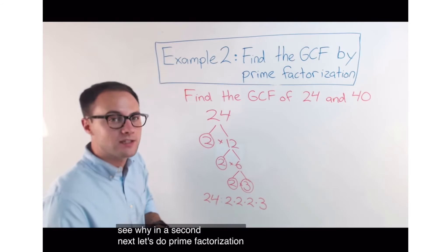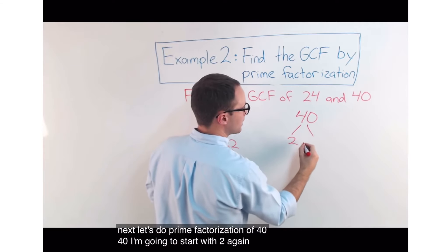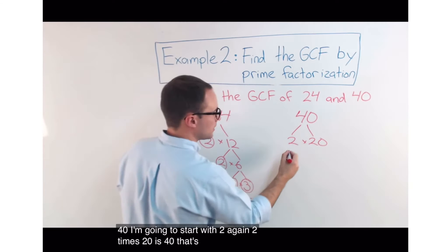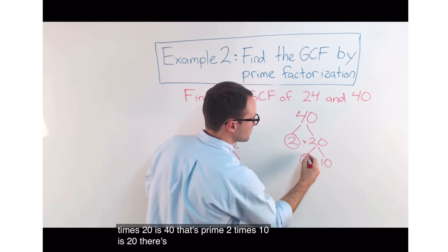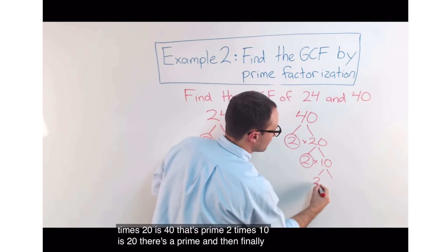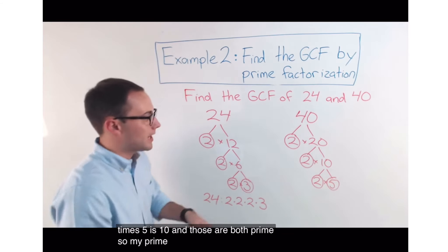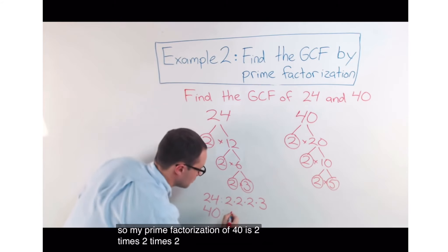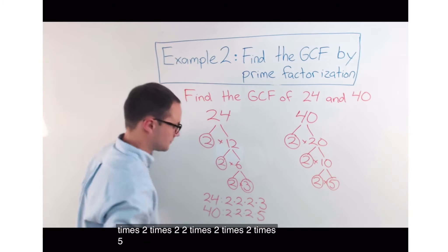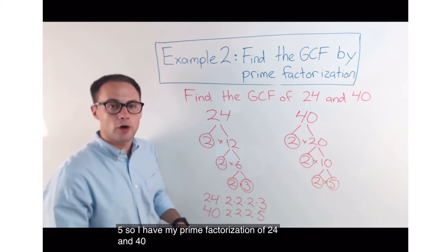Next, let's do prime factorization of 40. 40, I'm going to start with 2 again. 2 times 20 is 40. That's prime. 2 times 10 is 20. There's a prime. And then, finally, 2 times 5 is 10. And those are both prime. So, my prime factorization of 40 is 2 times 2 times 2, 2 times 2 times 2 times 5. So, I have my prime factorization of 24 and 40 done.